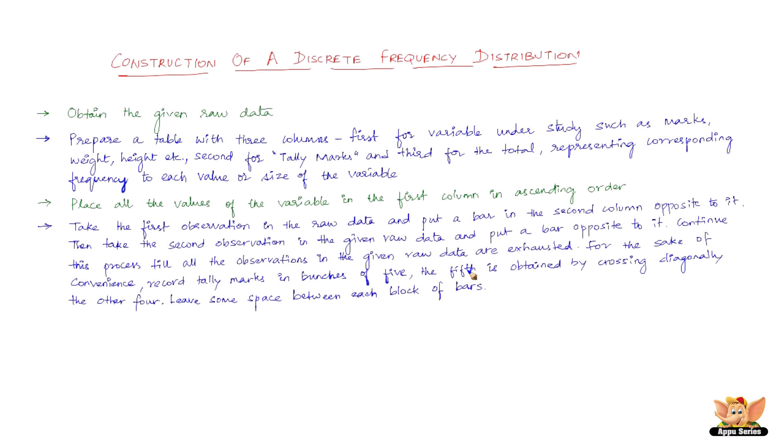The fourth step, take the first observation in the raw data and put a bar in the second column opposite to it. Then take the second observation in the given raw data and put a bar opposite to it. Continue this process till all the observations in the given raw data are exhausted.